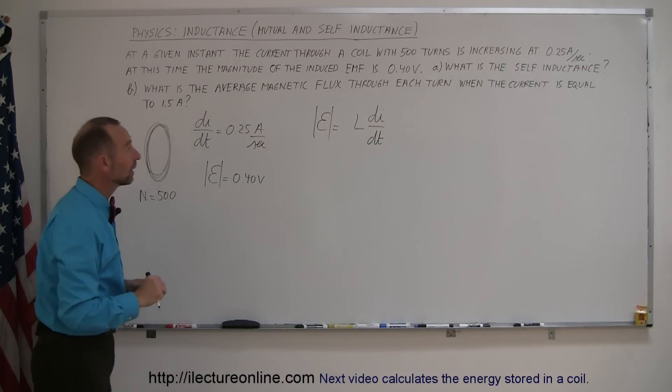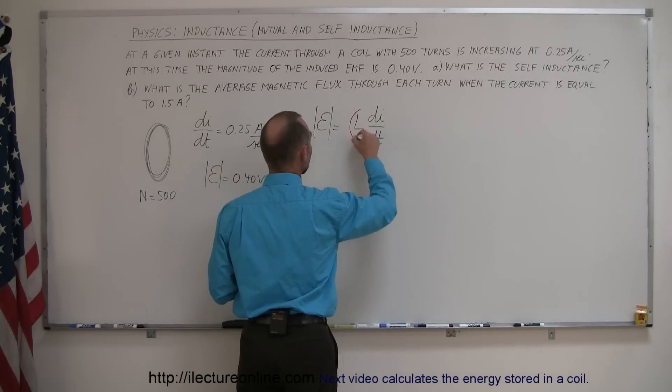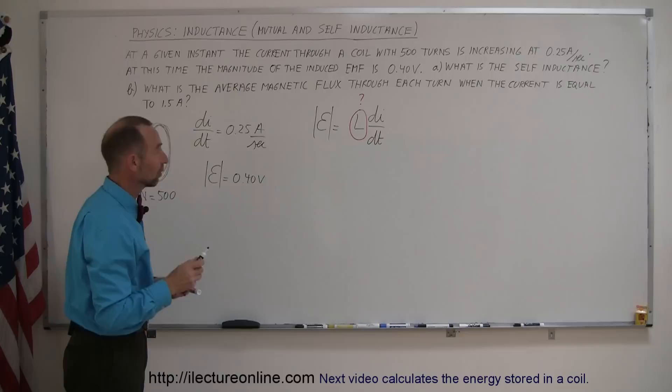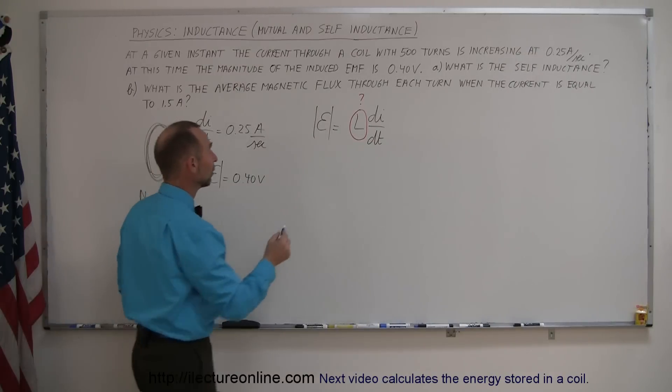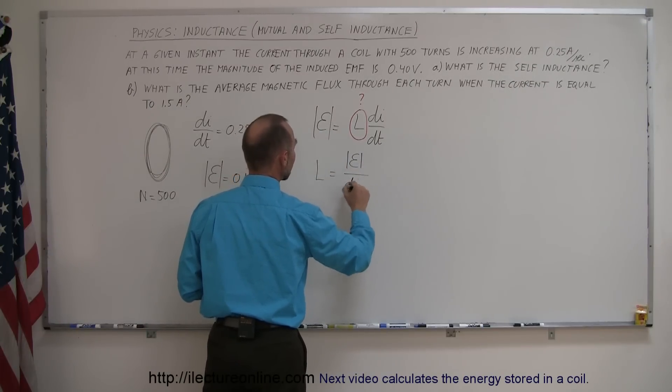All right, so self-inductance is what we're looking for. So for part A, we're looking for self-inductance. So let's put a little circle around here. That's what we're looking for. And so let's solve that equation for the self-inductance. L is used for self-inductance. I don't know why, but it is. So L is equal to the EMF induced, the magnitude of that, divided by the di/dt, the change in the current to the loop per unit time.